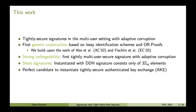Besides that, we were able to refine the construction considered by Abe et al. and Fishlin et al. to shorten the signatures. Concretely, this means that when instantiated with DDH, our signatures only consist of three Zq elements, where q is the size of the Diffie-Hellman group. All of these properties — strong unforgeability and short signatures — make our construction a perfect candidate to instantiate tightly secure authenticated key exchange.